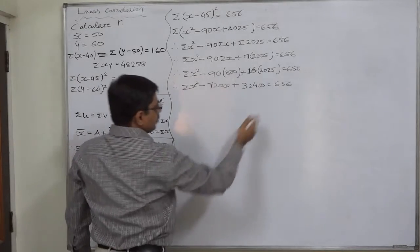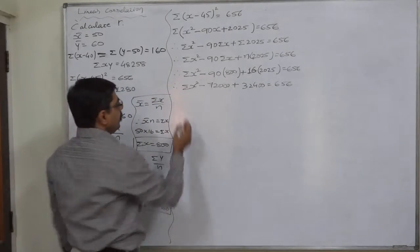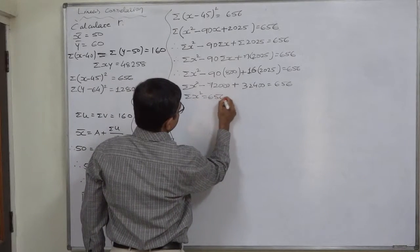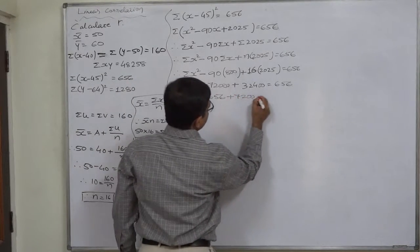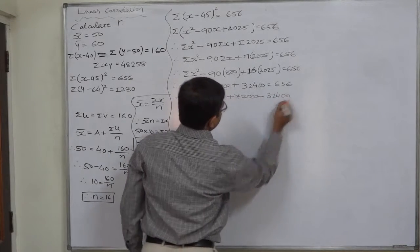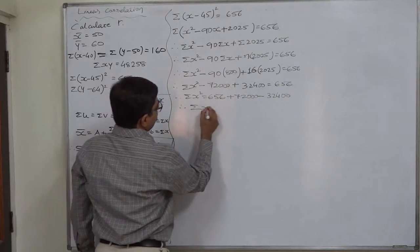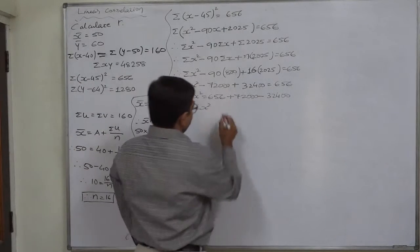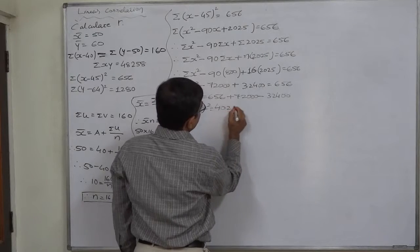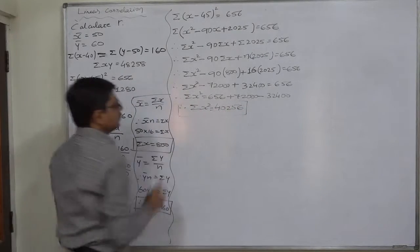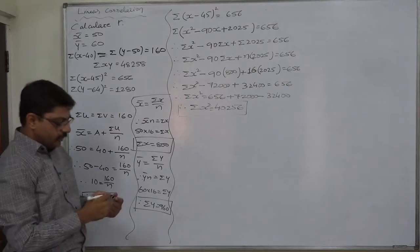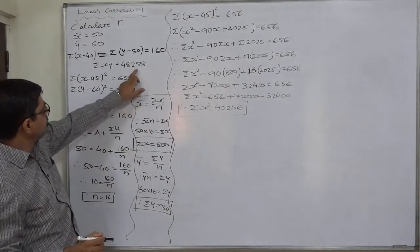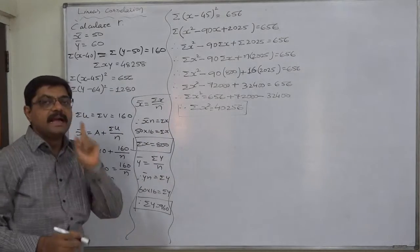We have now obtained the fourth summation. So we have sigma x, sigma y, sigma XY, and now sigma x-squared. The only remaining summation is sigma y-squared, which we will find from sigma(y minus 64)² = 1280.